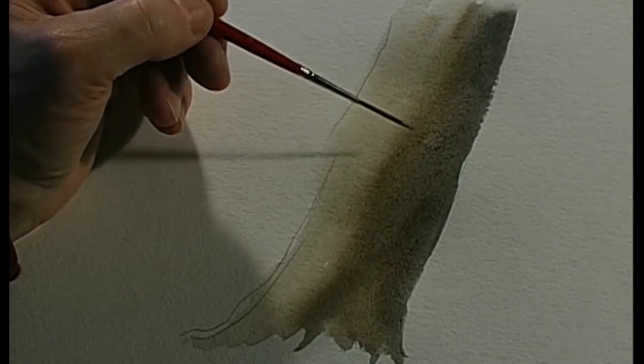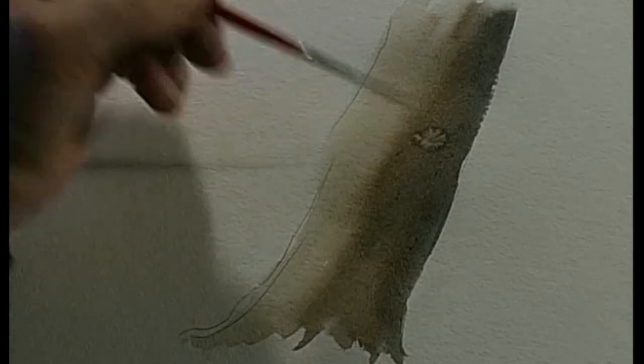I then take my little rigger brush and get some water into it, not too much, just a little bit. The color on the tree trunk is still wet, and you can see what happens when I just touch it with the wet brush. I get a run back. This is an area where the water from my brush is beginning to dissolve the pigment which is already on the paper, which is beginning to dry on the paper.